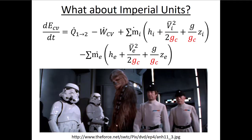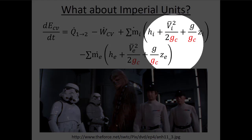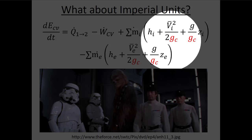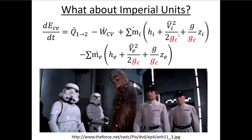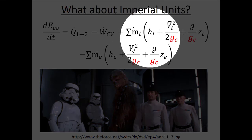In imperial units it's even worse, because first we have to remember to divide by GC — that's like an acceleration of gravity with extra funny units so we can get rid of pounds mass and put in pounds force. Even after that, we'll get a unit like foot-pounds per second, so we'll have to convert to BTU by dividing by 778, because when we look up enthalpy in the textbook the specific enthalpy will be in BTU per pound mass.